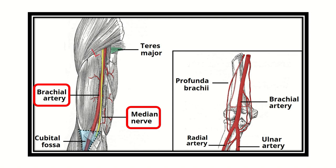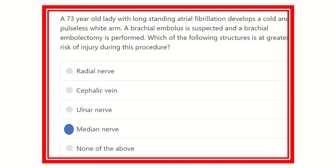In the lower area, the median nerve is in the anterior part, and then it also runs in the medial part. So the median nerve is very close throughout the entire course of the brachial artery. During embolectomy of the brachial artery, there may be damage to the median nerve.